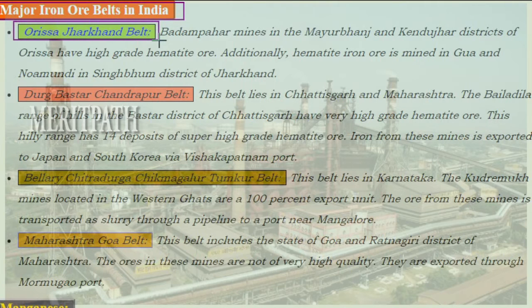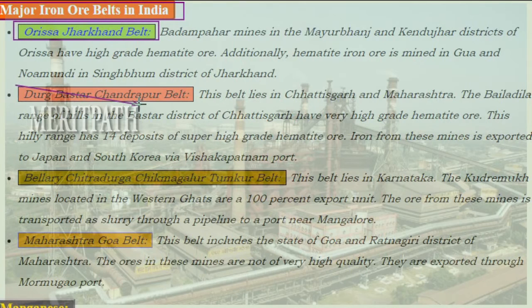The Badampahar mines in the Mayurbhanj and Kendujhar districts of Odisha have high-grade hematite ore. Additionally, hematite ore is mined in Gua and Noamundi in the Singhbhum district of Jharkhand. Next is the Durg-Bastar-Chandrapur belt.